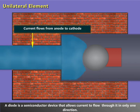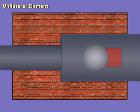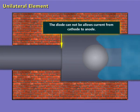Current flows from anode to cathode. The diode cannot allow current from cathode to anode.